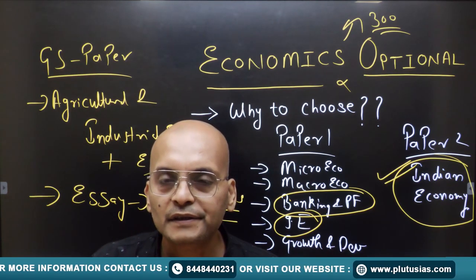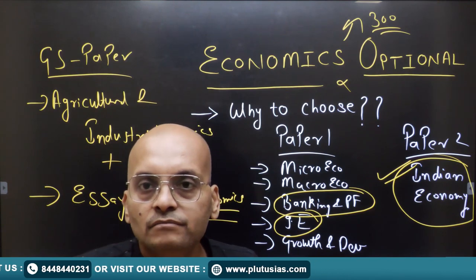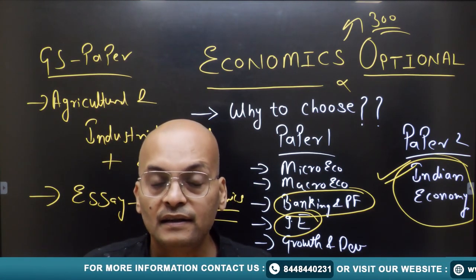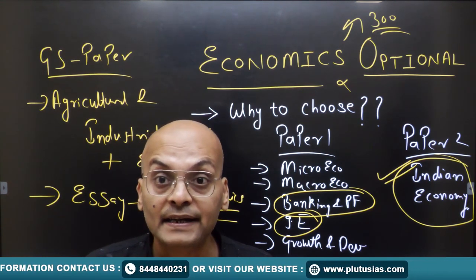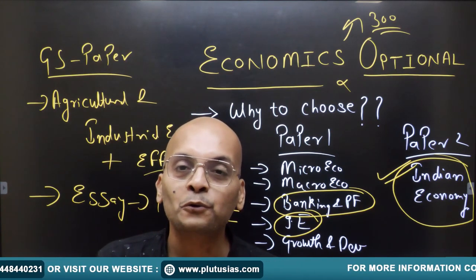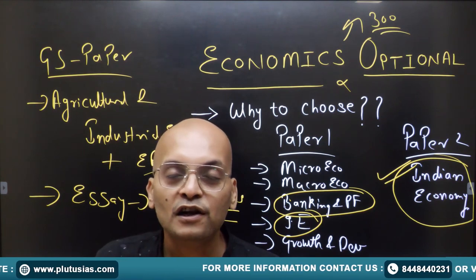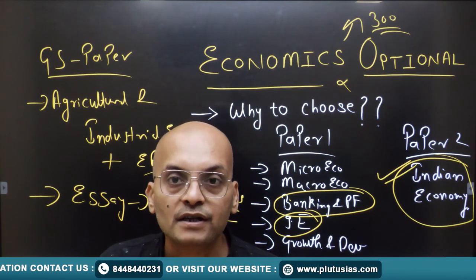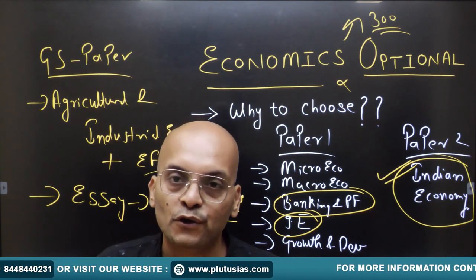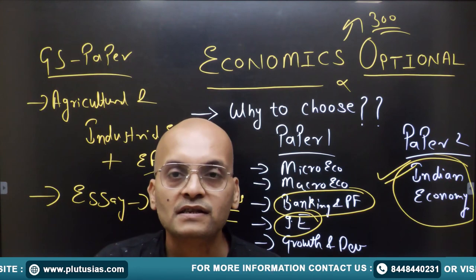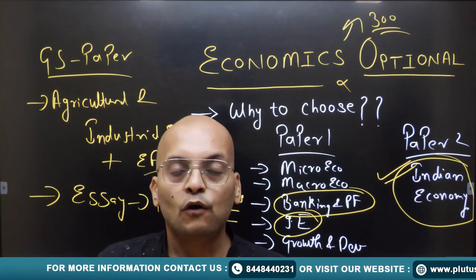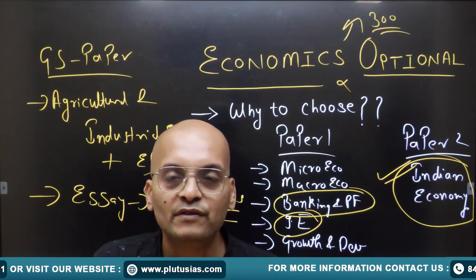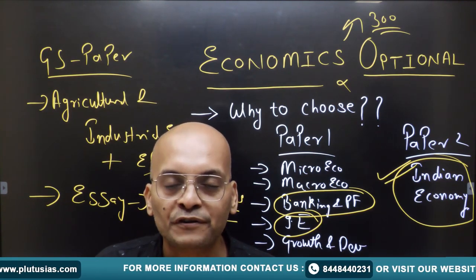You can go to the UPSC website where a list of optional subjects is given. Click on it and you can see the selection rate of students who take economics — it is one of the highest. Getting 300 marks out of 500 in economics optional is very easy, thereby improving your chances of selection by a great deal. Plus, in the interview also, you will face two to three or more questions from economics. Such an important and relevant subject can give you a ladder for your success. We are starting a fresh batch for economics optional from 24th of October, so hurry up and get enrolled in Lutus IAS. Thank you.